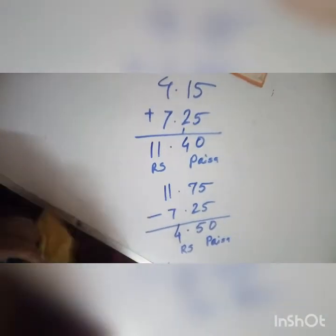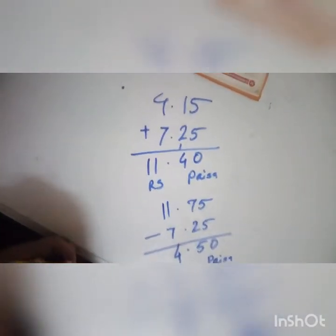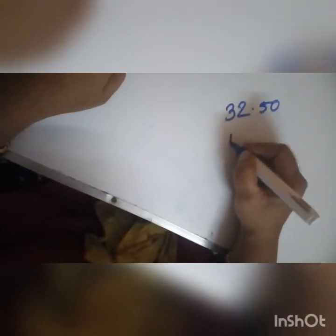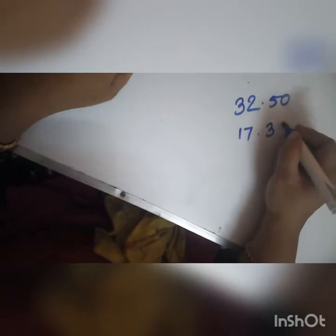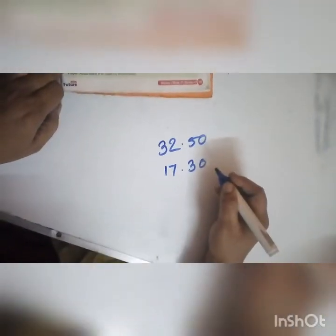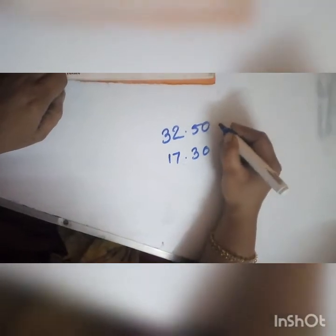Like this. Now you have to solve the exercise on page number 75. We will add by converting the amounts to paisa first. We have 32 rupees and 50 paisa, and 17 rupees and 30 paisa. You have to convert the rupees to paisa and then add them. How do we convert this?